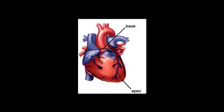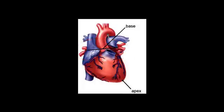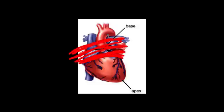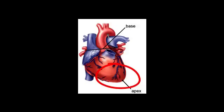The base of the heart is actually the upper, flatter portion of the heart. Don't think of base as bottom — in the heart, the base is the flatter portion at the top. The apex is the pointier part, so the apex of the heart is this lower, pointy part.